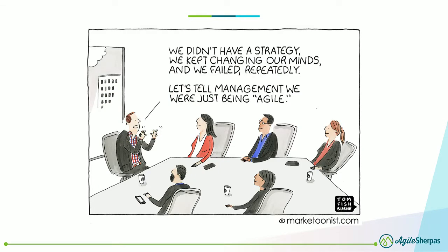Here's the cartoon from Tom Fishburne about this very common misunderstanding of what agile marketing actually means. When we don't have a strategy, we change our minds a lot, and we fail over and over again — let's just blame it on being agile and we're off the hook. That is not the kind of agility that we need in order to deal with the complexities of modern marketing. We definitely need something more substantial, more robust, more rigorous.